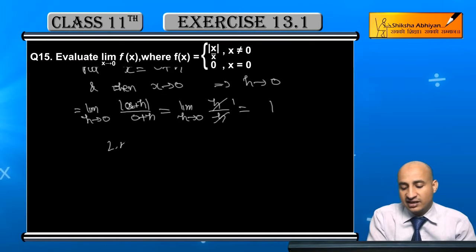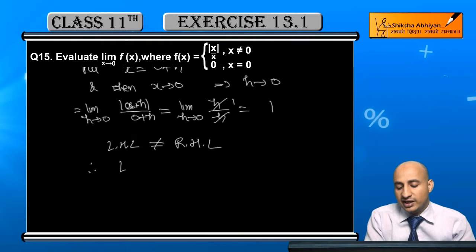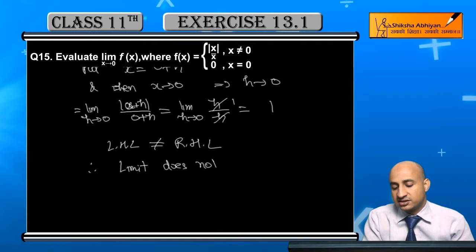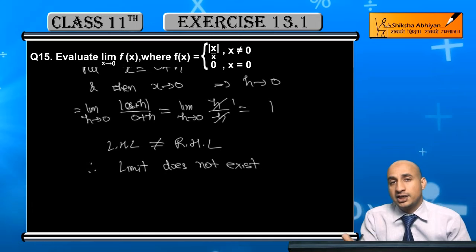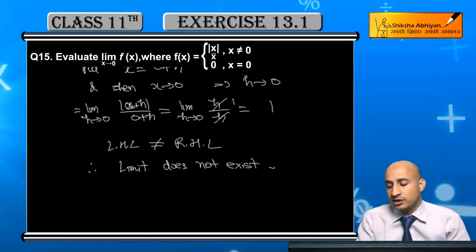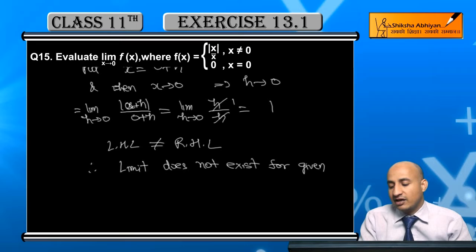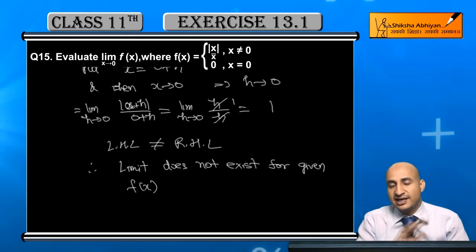Since the left-hand limit is minus 1 and the right-hand limit is 1, the left-hand limit is not equal to the right-hand limit. Therefore, the limit does not exist. The limit exists only when the left-hand limit and right-hand limit are equal; for the given function, the limit does not exist.